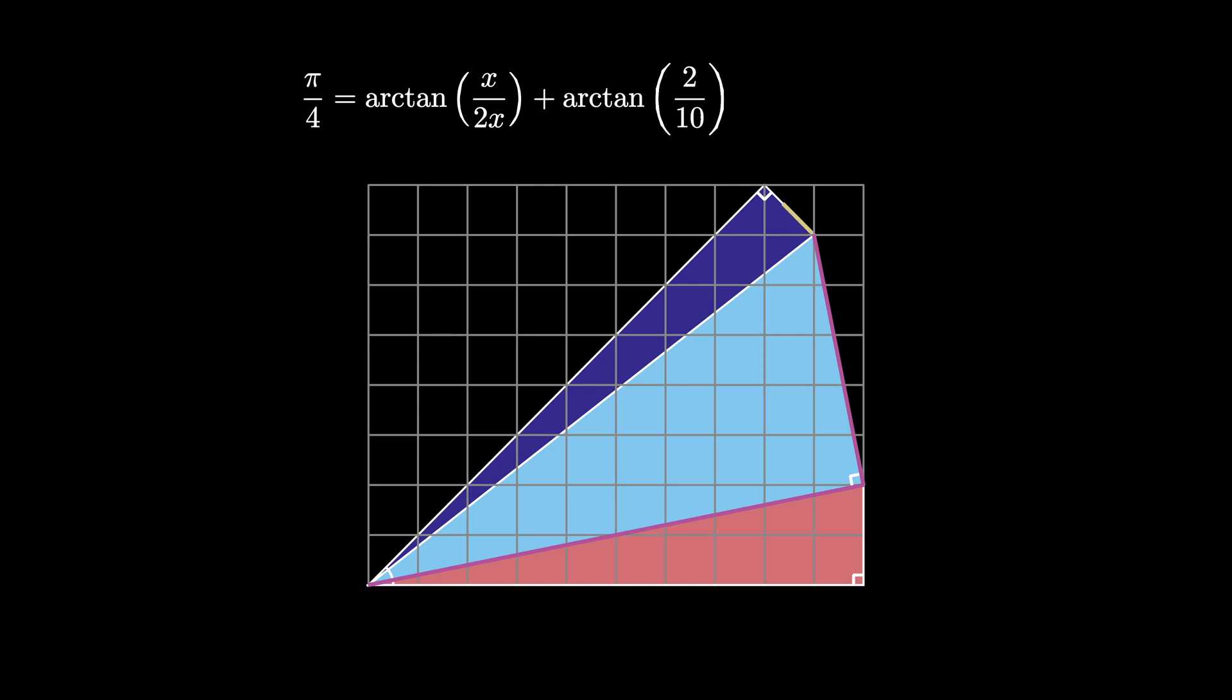And finally, for the top purple triangle, if we label one side length y, we see that the other side length is actually 8 times as long as y, and therefore has a value of 8 times y. This means that the small angle in the left of the purple triangle must have a measurement given by the arctangent of y divided by 8y.